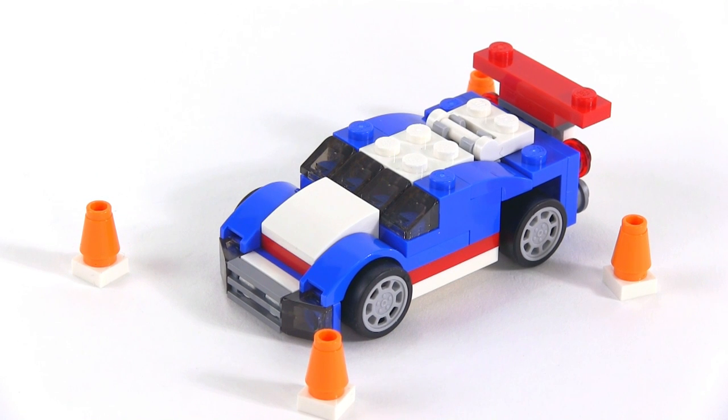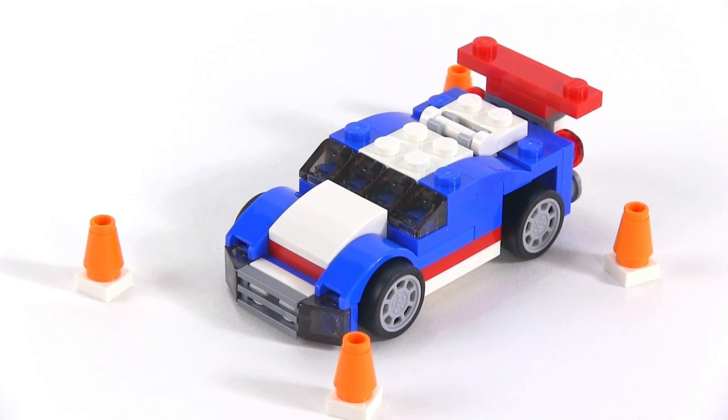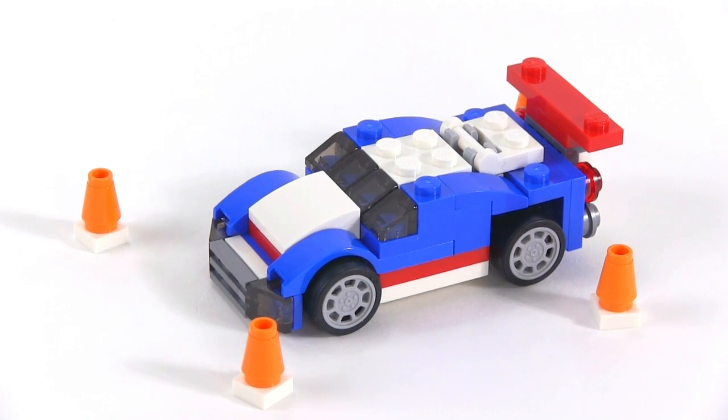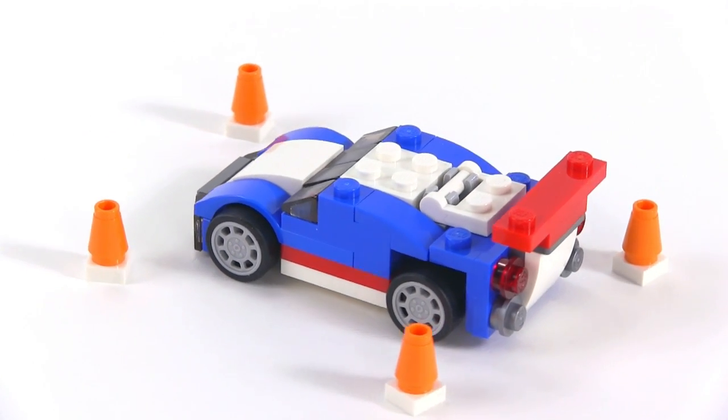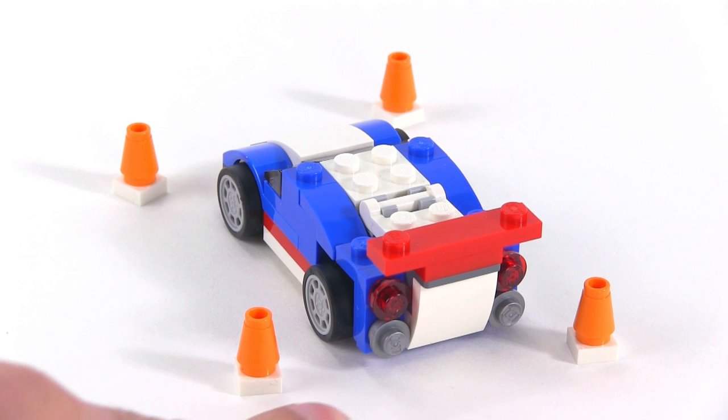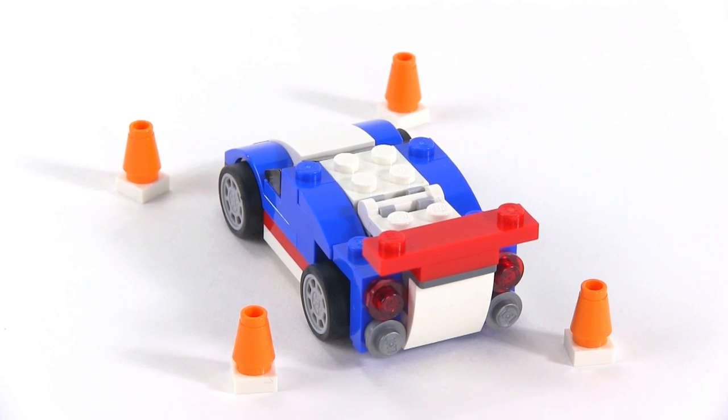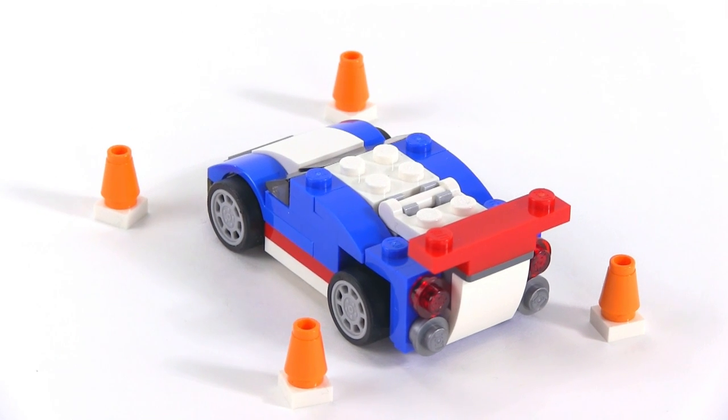So obviously, race car, nice styling, stripes, racing stripes, low to the ground, wide, wing on the back, kind of approximating exhaust, I believe, here with the silver little dots, little stud pieces.